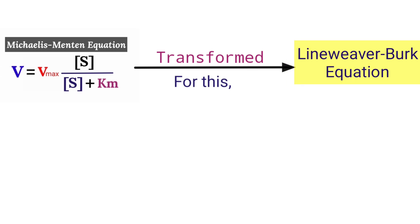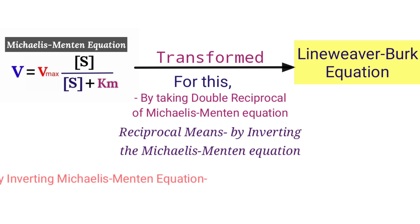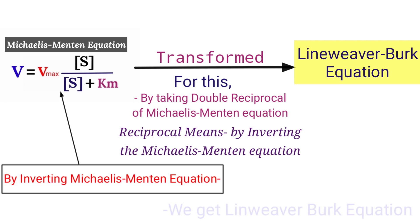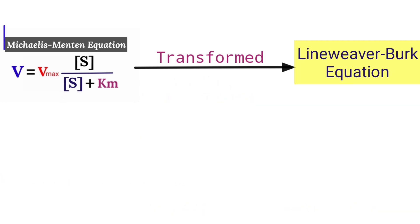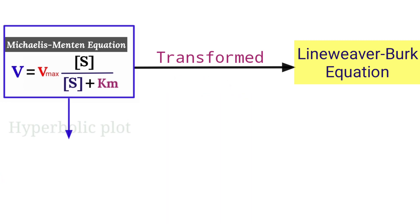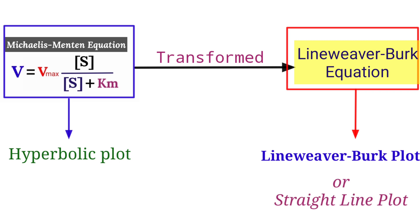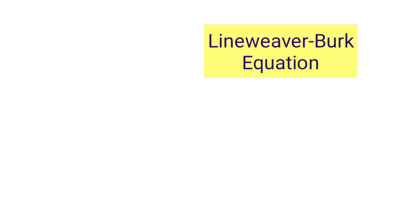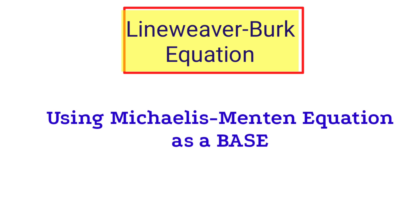Lineweaver and Burk transformed the Michaelis-Menten equation into the Lineweaver-Burk equation. To do this, they took the double reciprocal of the Michaelis-Menten equation — they inverted both sides. By inverting the Michaelis-Menten equation it generates the Lineweaver-Burk equation. Just as the Michaelis-Menten equation generates a hyperbolic plot, the Lineweaver-Burk equation generates a straight-line plot.